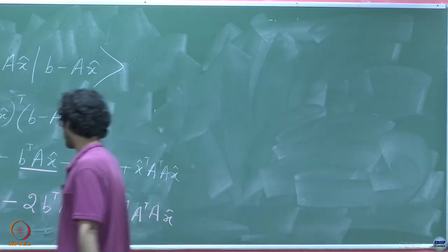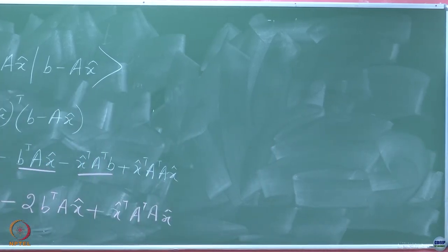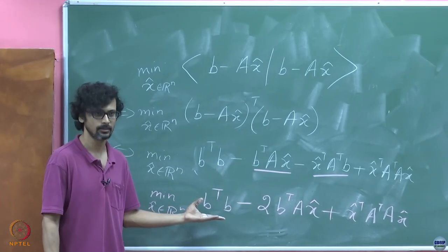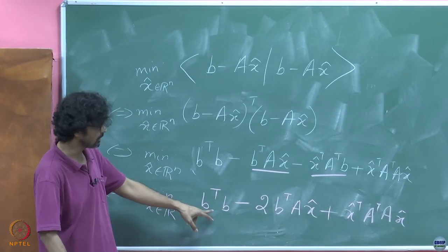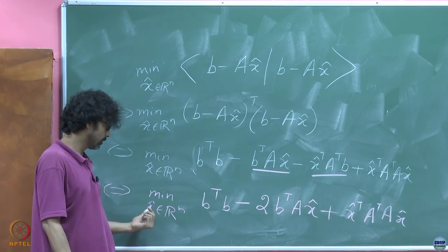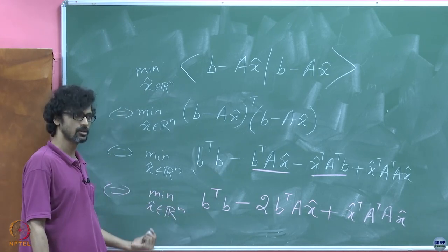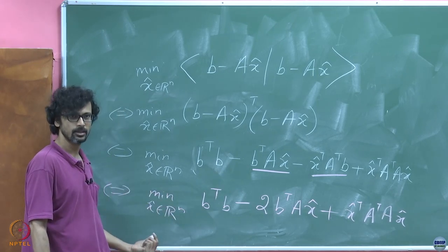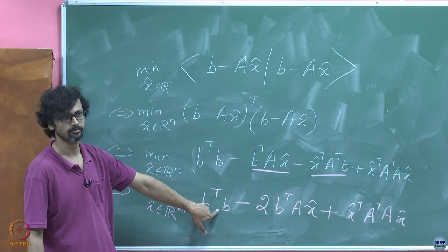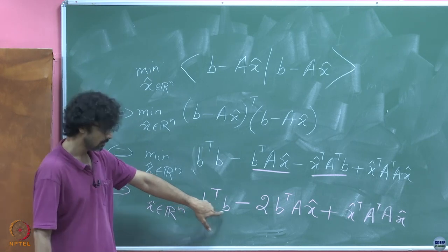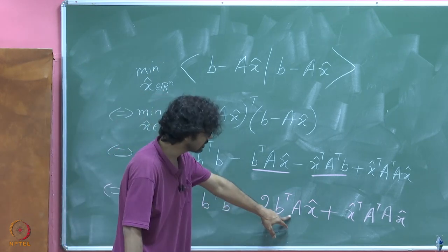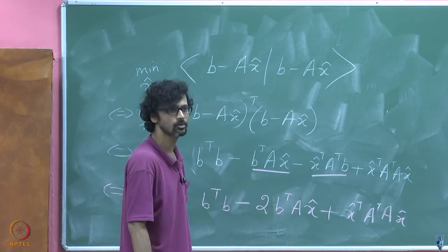Of course, b^T b is just a scalar constant — no matter what x̂ you take from R^n, its partial derivative with respect to any component of x̂ is going to be 0. But what about the linear term? Let us try and investigate what that object looks like.